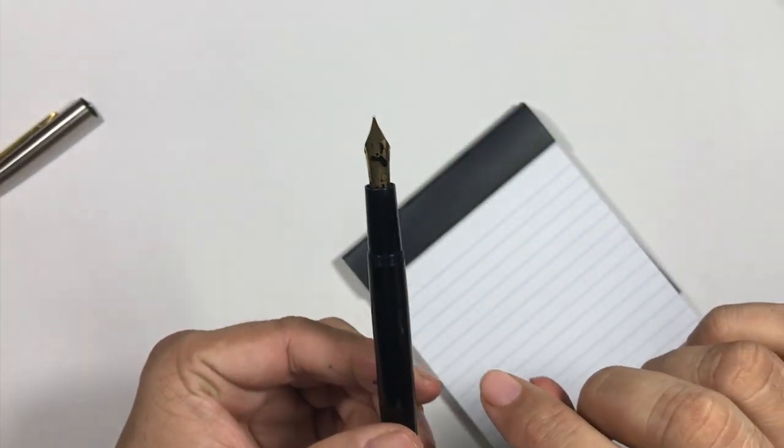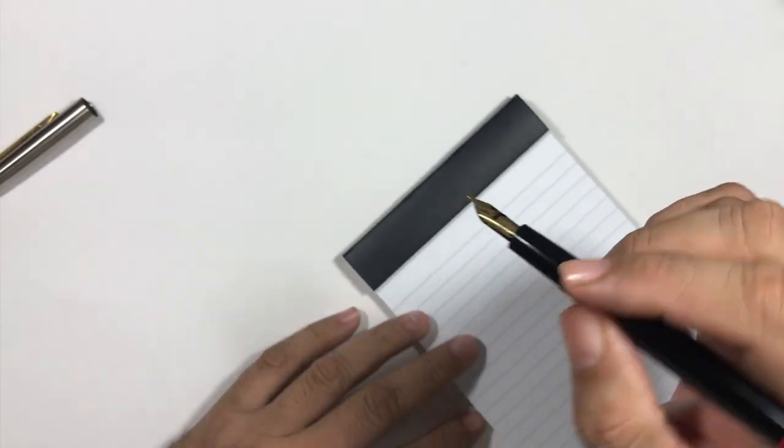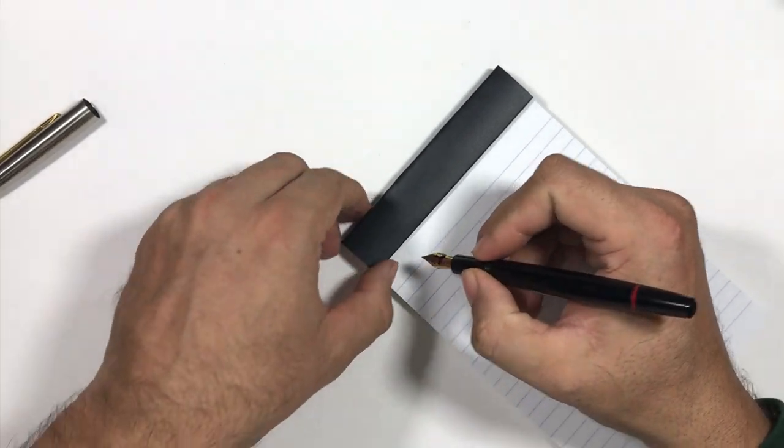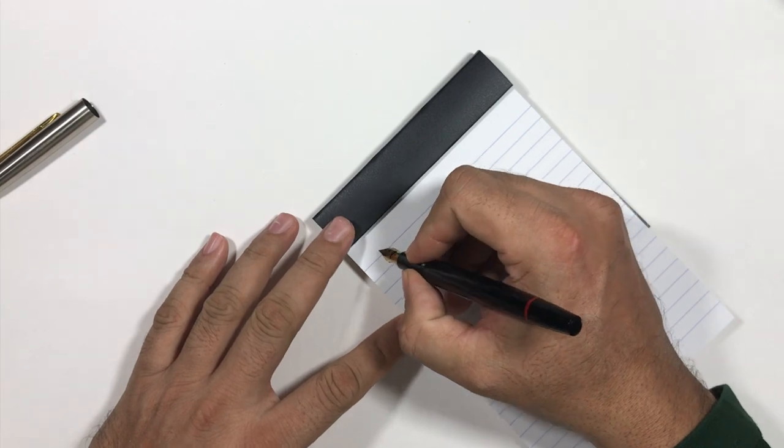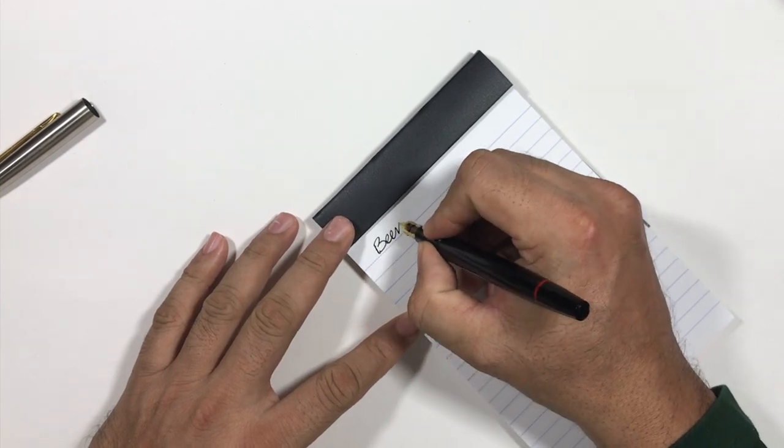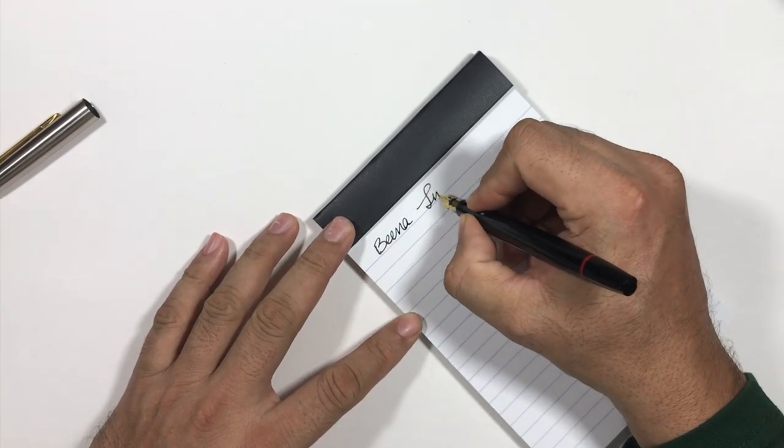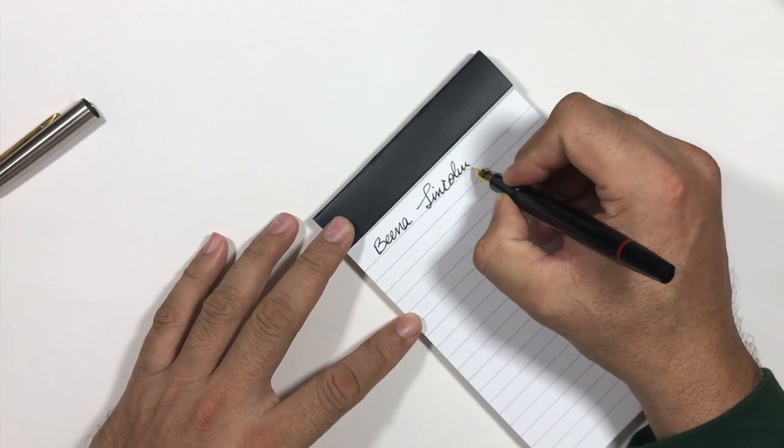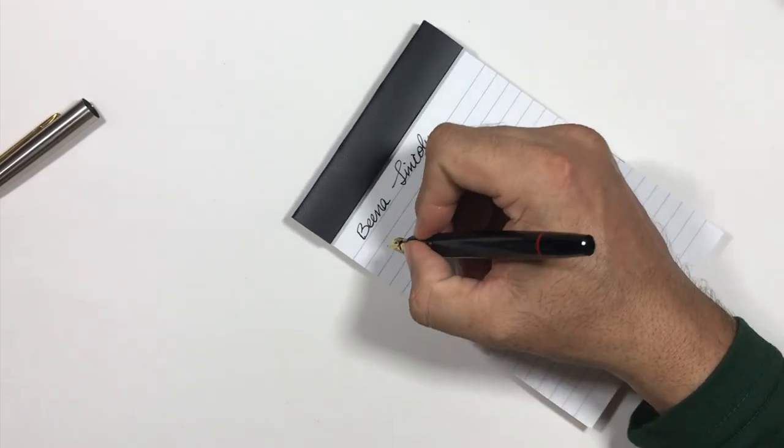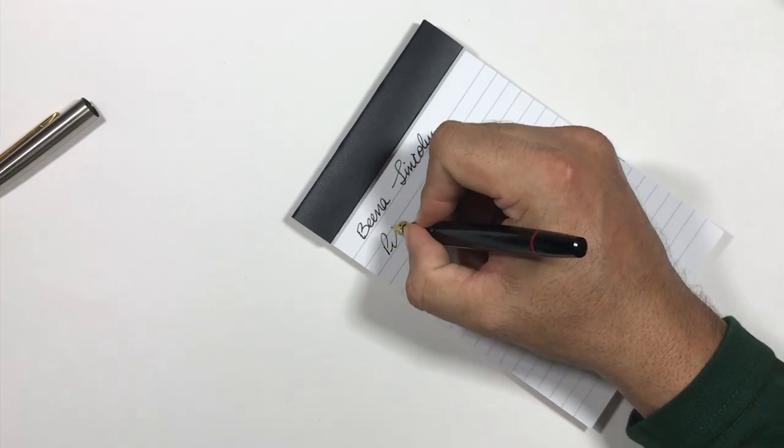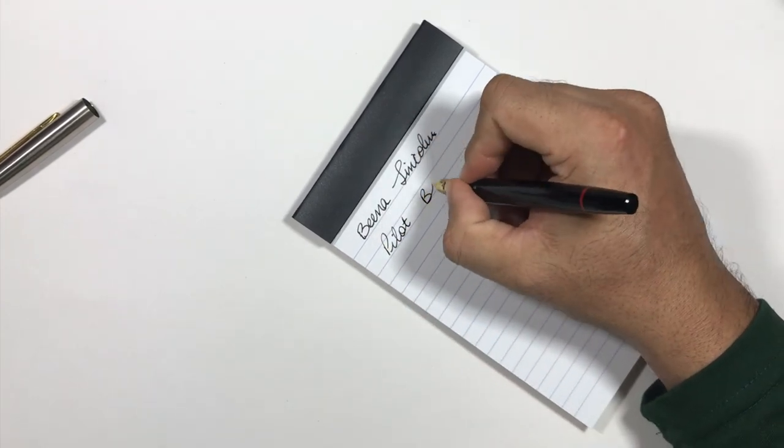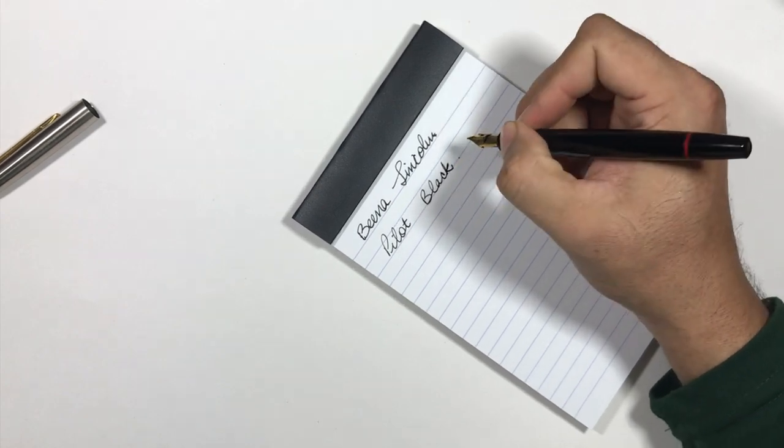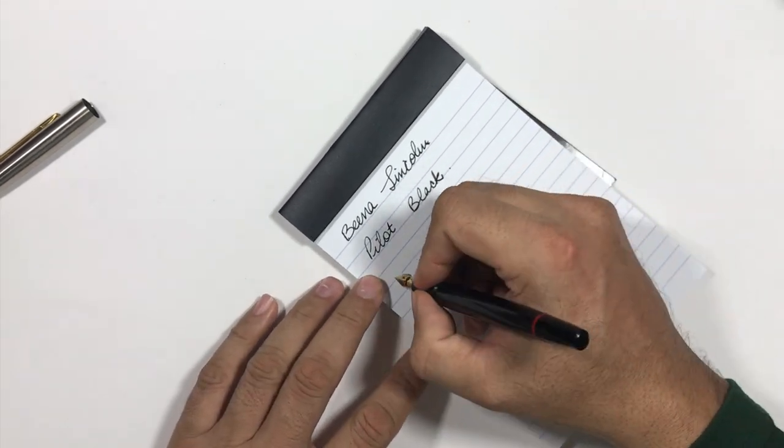You can see this pen is very wet—there's ink all around in the feed and on the nib as well. The pen for the day is Beena Lincoln with an L. Ink is Pilot Black. Let's write something.